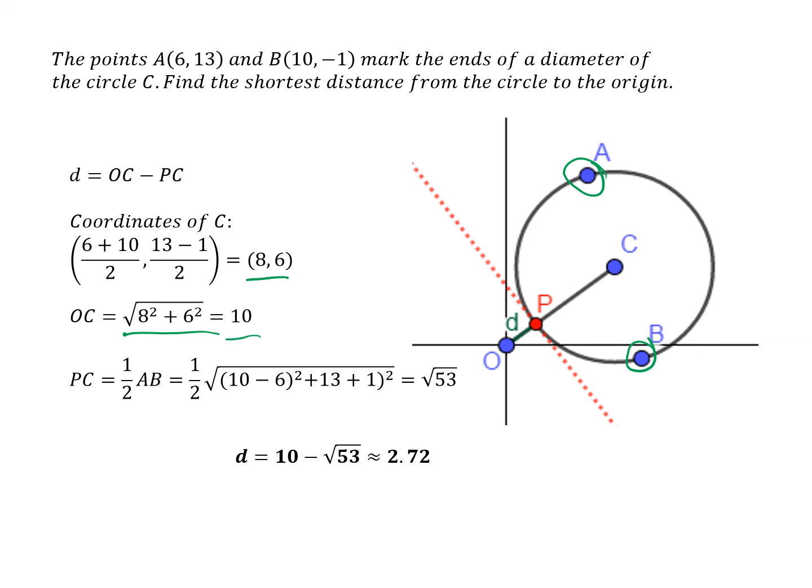And then PC is a radius, so PC is half of the diameter, and we can calculate that using the coordinates of A and B. It should be a bracket just there, and that gives us the square root of 53.